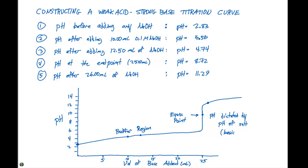This will be basic for a weak acid, strong base titration. Then after the endpoint, the pH increases due to excess OH minus ions here in the solution.